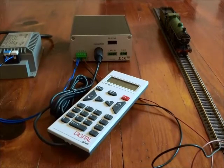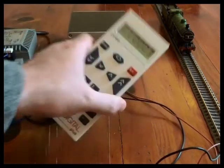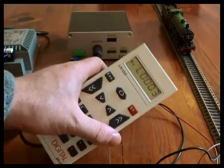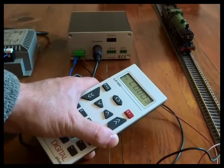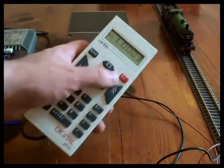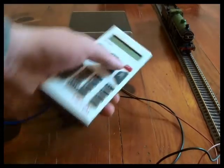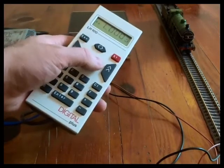In most instances your first decoder-fitted locomotive will be delivered on address 3. Factory setting for factory-fitted decoders and for plug-in decoders is usually address 3, and the decoder in this locomotive is on that setting.